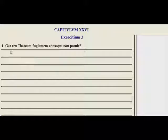Question and answers. So we have, Cur rex Theseum fugientem consequi non potuit? Why was the king not able to keep up with Theseus as he ran away? Okay. Rex Theseum non potuit quia navis Tesei celerior quam navis regis erat. Because the ship of Theseus, celerior, was faster than the ship of the king. So here we have quia navis Tesei celerior quam. Because the ship of Theseus was faster. Okay.